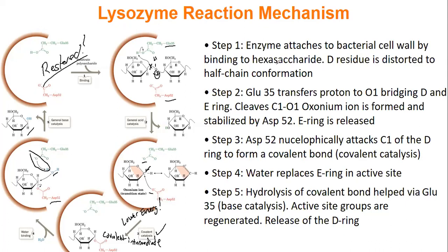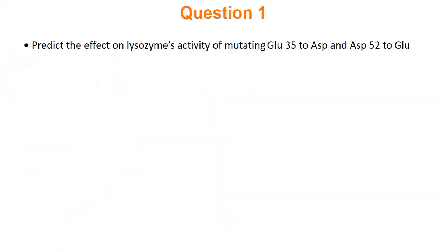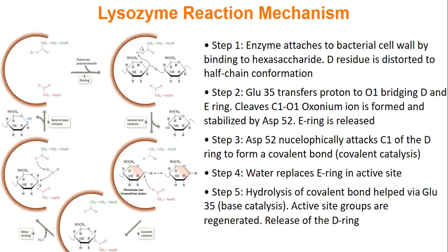A question: what would happen if we swapped glutamic acid and aspartic acid using mutagenesis — putting aspartic acid at position 35 and glutamic acid at position 52? The activity would certainly go down. Even though they're both normally negatively charged, one has two carbons and the other has three carbons — aspartic acid versus glutamic acid.